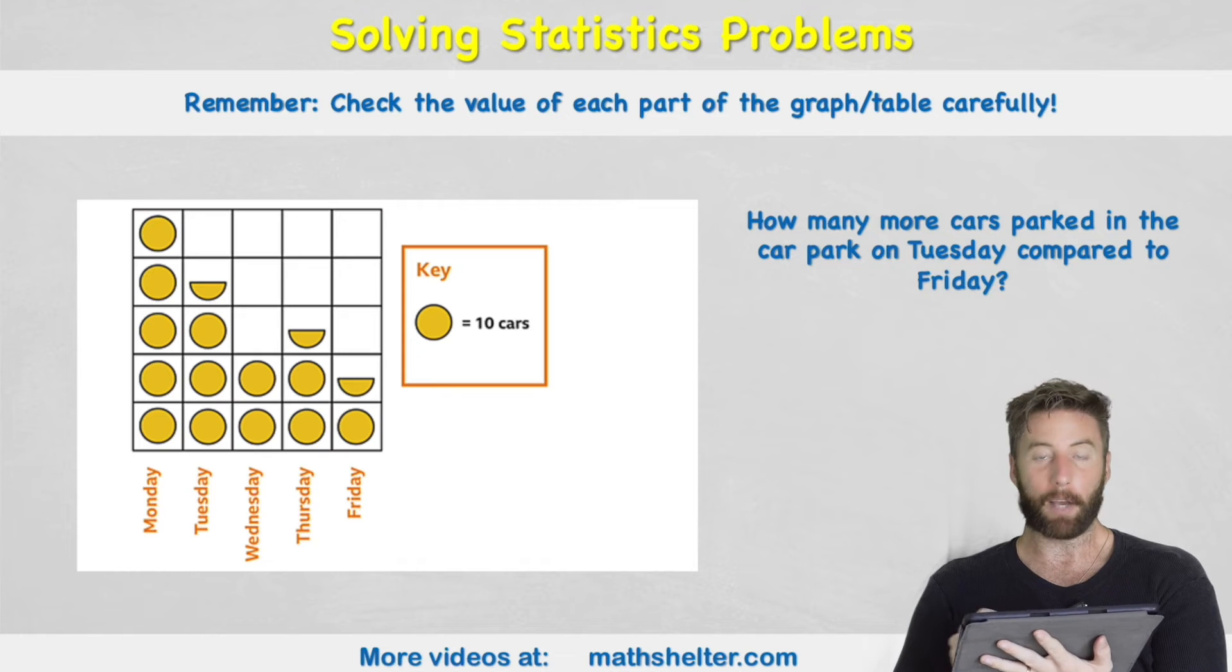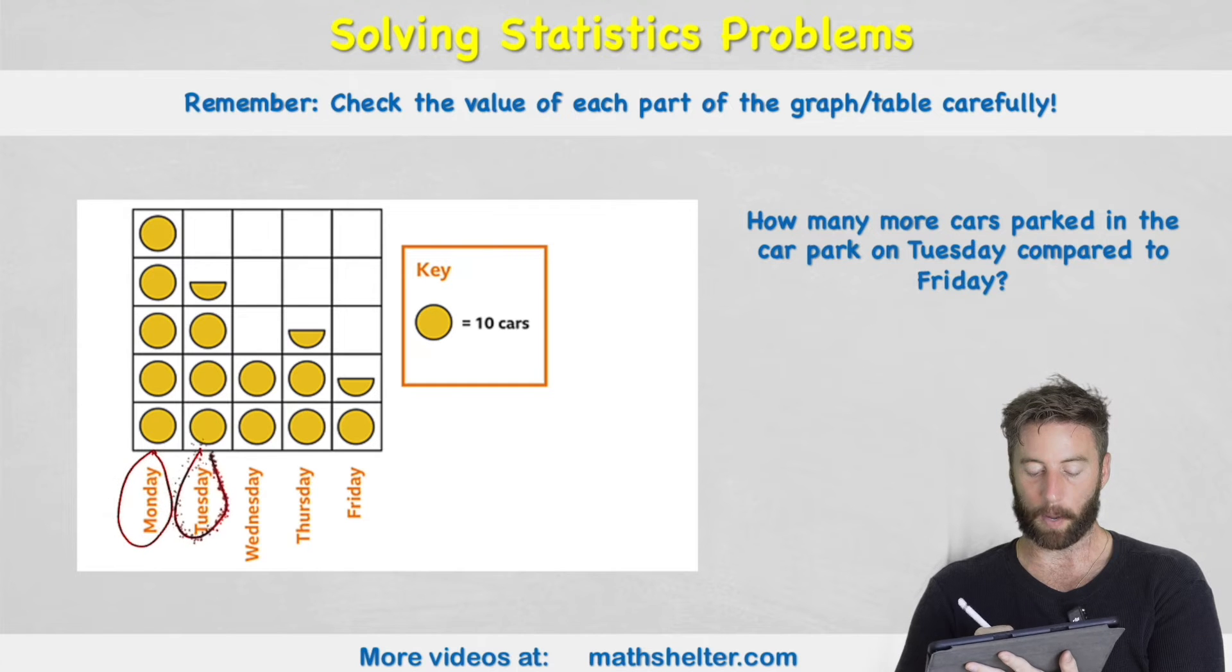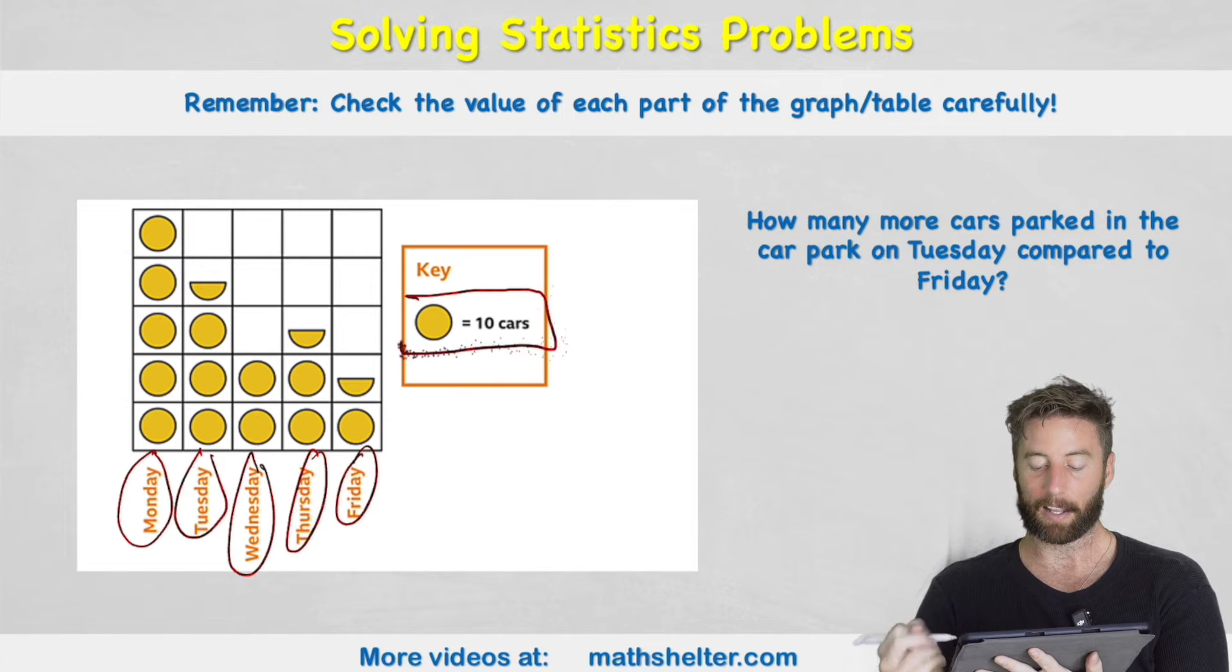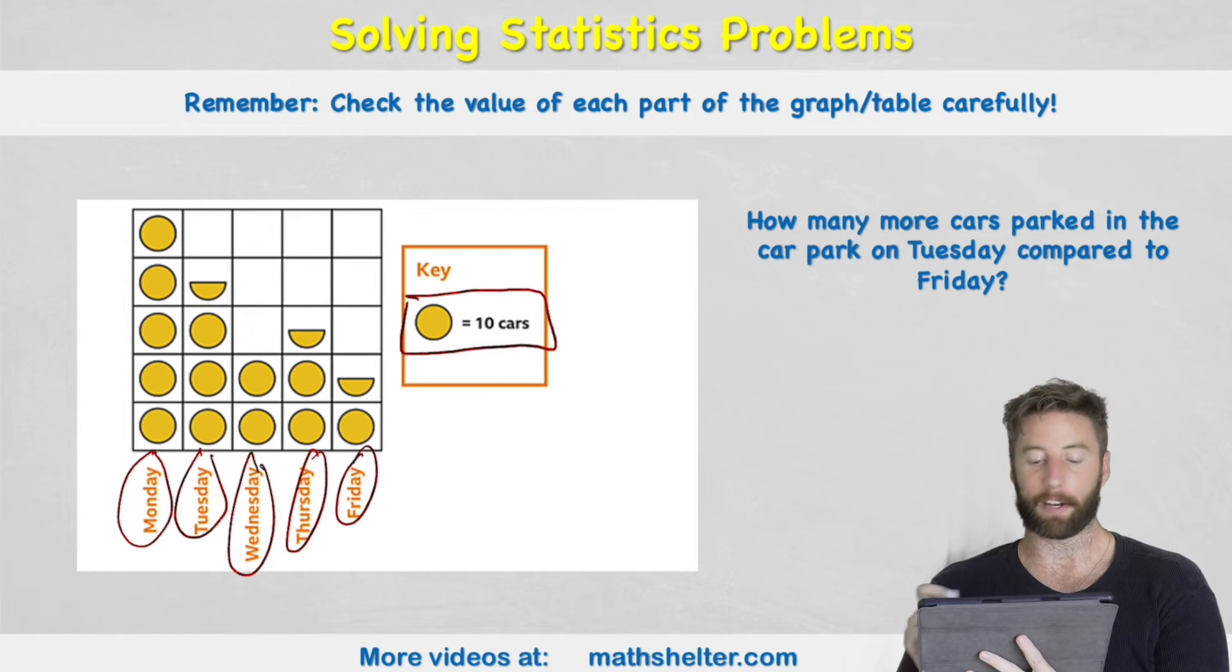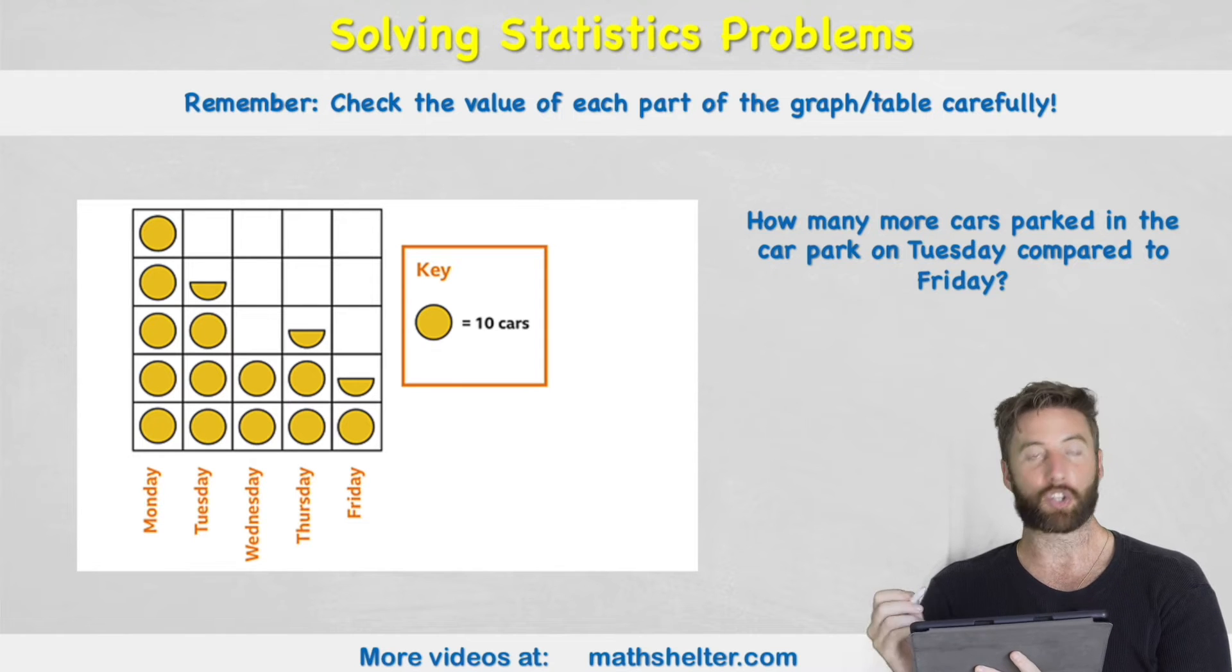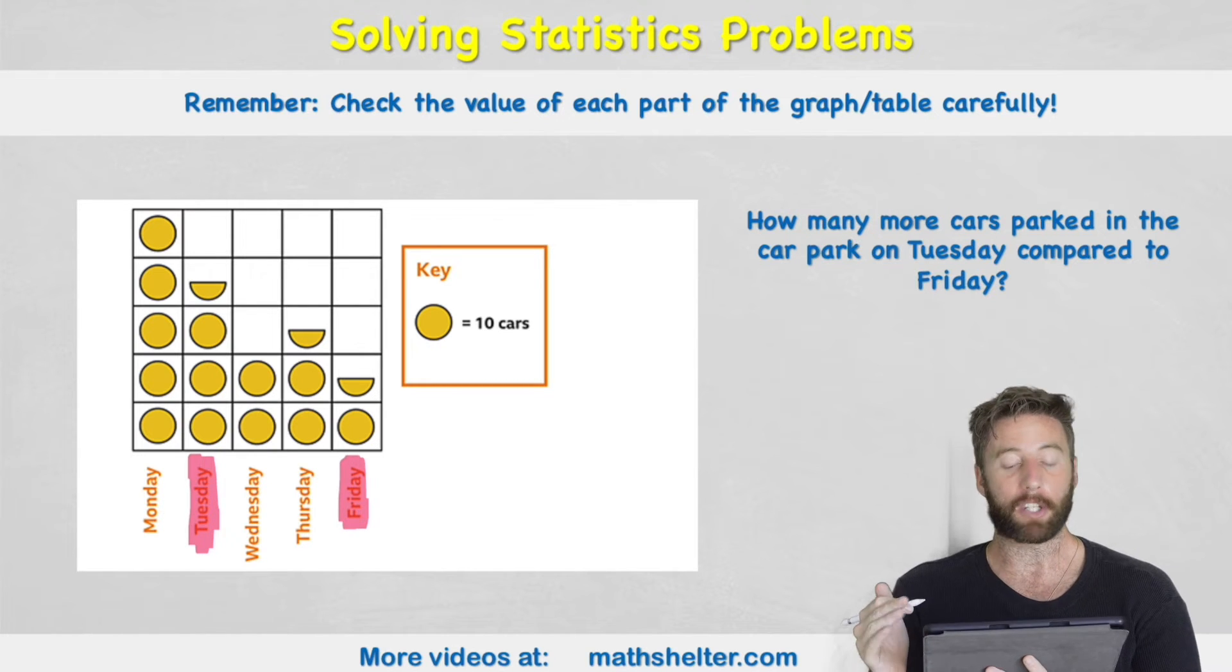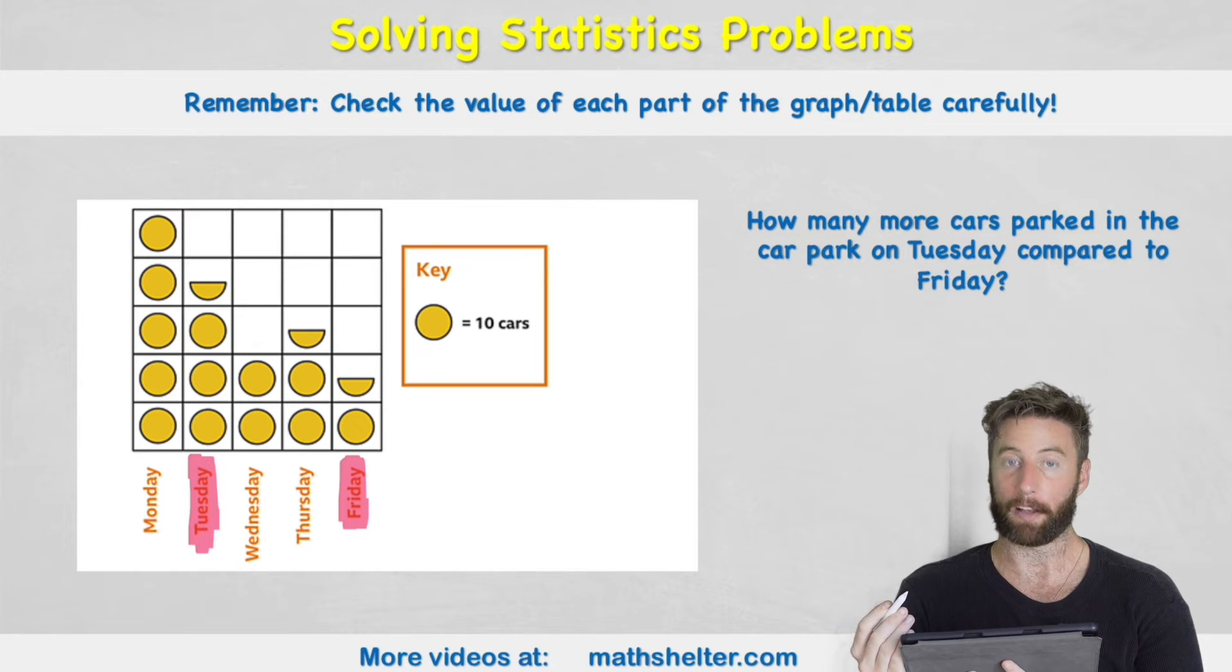Let's look at another example. Here we can see a pictogram and I can see across the bottom here we have days of the week: Monday, Tuesday, Wednesday, Thursday and Friday. And I can see that each of those circles represent 10 cars. And this question is all about how many cars are parked in the car park on these various different days. So my question says how many more cars parked in the car park on Tuesday compared to Friday. So first things first we need to work out how many there are on Tuesday and Friday.